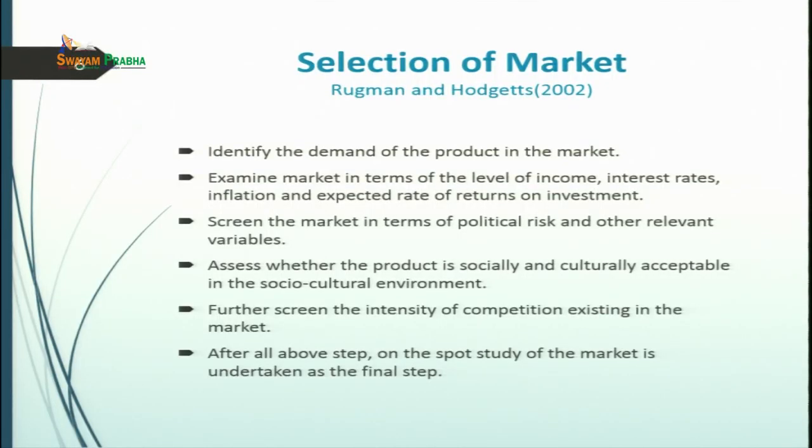The sixth step — an on-spot study of the market — is undertaken as the final step, because all the previous steps are just prerequisites. You cannot do one analysis and blindly follow it, because the environment is so dynamic and ever-changing. Research completed a year or six months before may become obsolete due to changes in the political environment or other developments. Therefore, you have to continually conduct on-spot studies of the market.